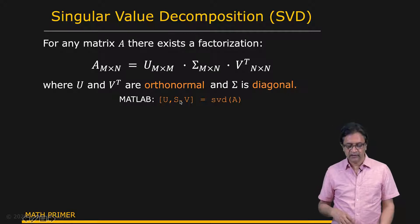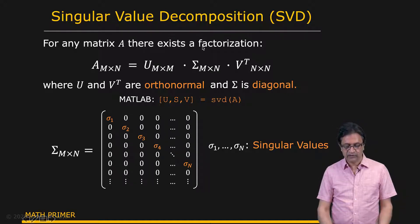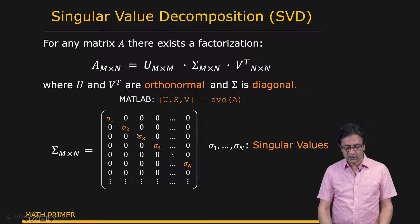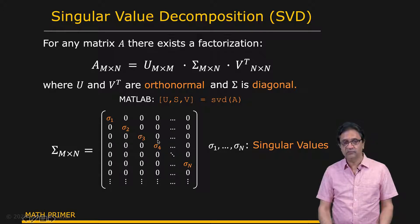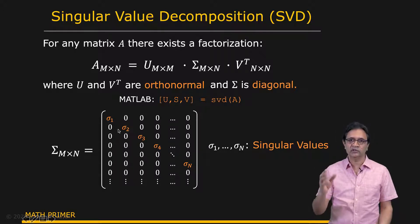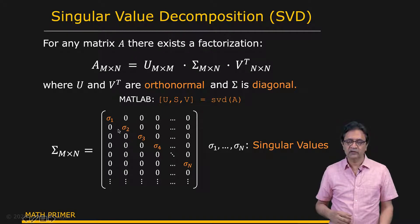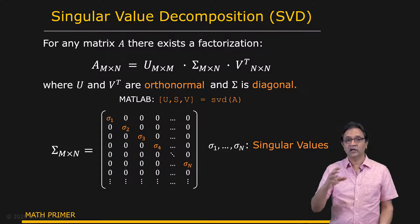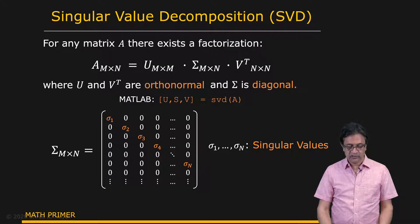Now let's look at the matrix sigma, which is of particular interest to us. It is a diagonal matrix, and along the diagonal you have all your singular values in descending order of importance. Sigma one is the most important singular value — these are all non-negative values and sigma one will be the largest of them. Sigma two will be the next largest, and so on.